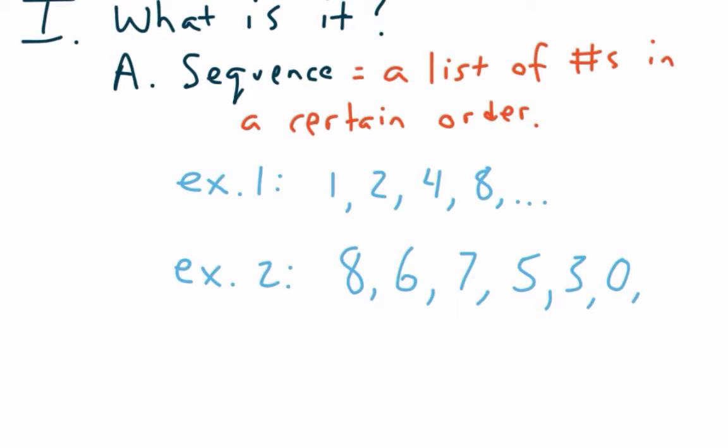Oh, it's a song! Does this sound familiar? 8, 6, 7, 5, 3, 0, 9. It's like an 80s song — 8, 6, 7, 5, 3, 0. Okay, now let's move on.